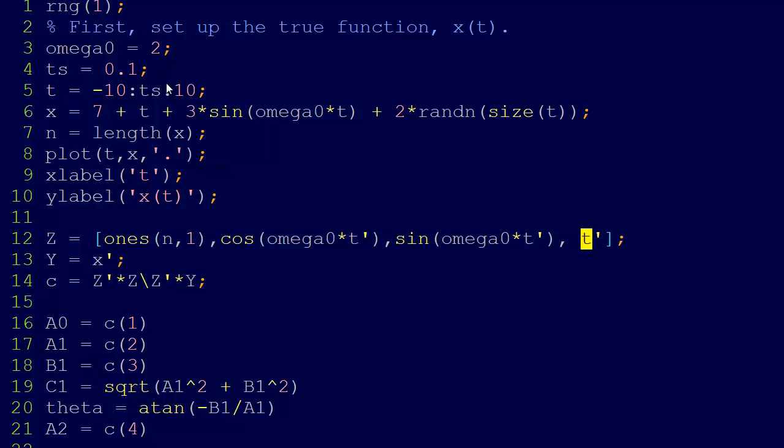And our y, our right-hand side, that matrix is x, or just our x. That's right. And so our coefficients then are equal to z, z transpose z. And then in this back divide, that just means that we're solving for the coefficients. And then the right-hand side is z transpose y. So this is exactly the same general equation we got before.